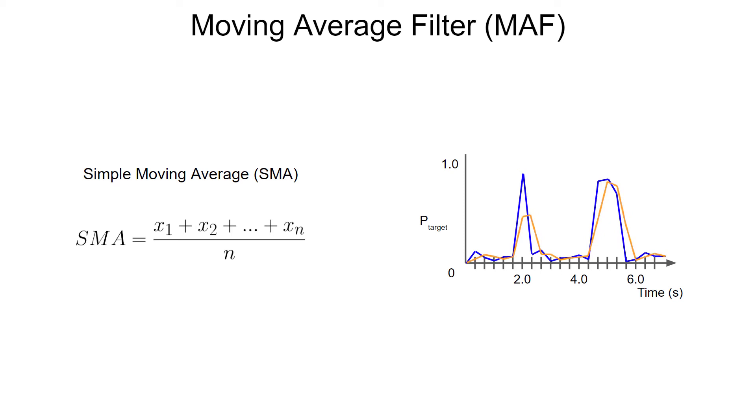For example, we can have our system trigger an action only when the moving average is above a threshold rather than the raw confidence score. When it comes to keyword spotting, this can help fight against false positives that might look like our keyword.